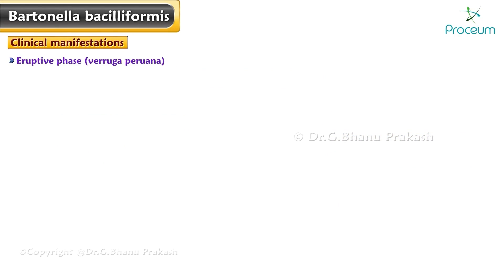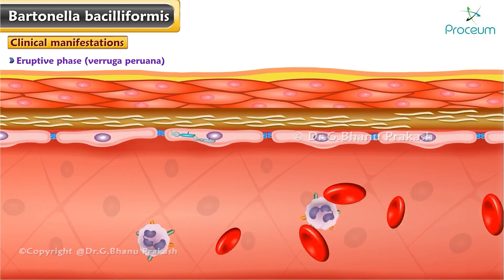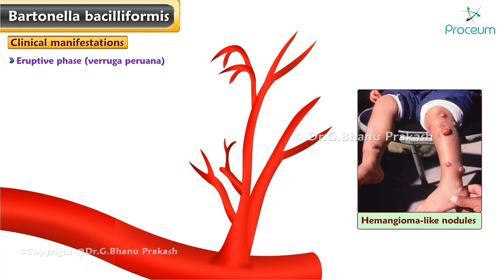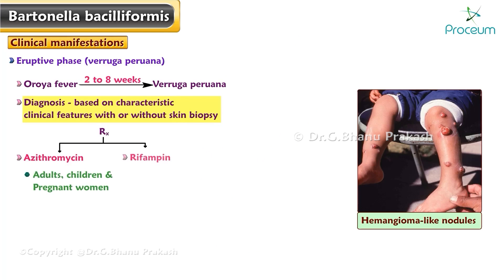Eruptive phase — Verruga peruana: The eruptive phase occurs after organisms invade capillary endothelial cells and induce cellular proliferation, producing hemangioma-like nodules in the skin and mucous membranes. Verruga peruana can appear two to eight weeks after the patient has apparently recovered from Oroya fever. Diagnosis is generally based on characteristic clinical features with or without skin biopsy. Azithromycin is the treatment of choice in adults, children, and pregnant women; rifampin is an acceptable alternative.